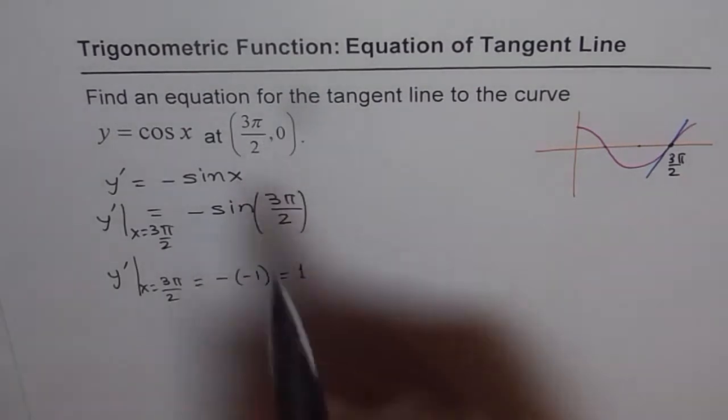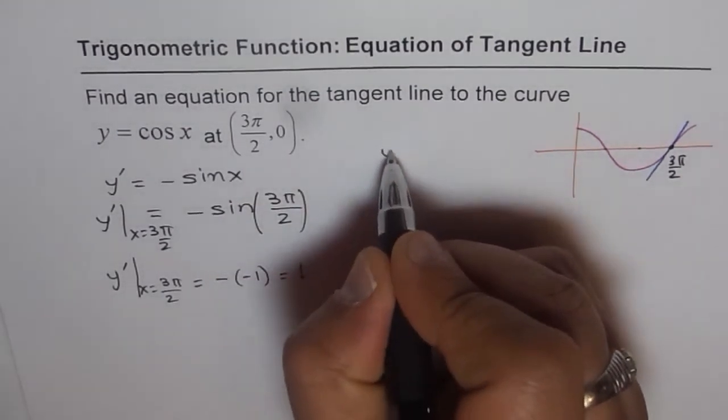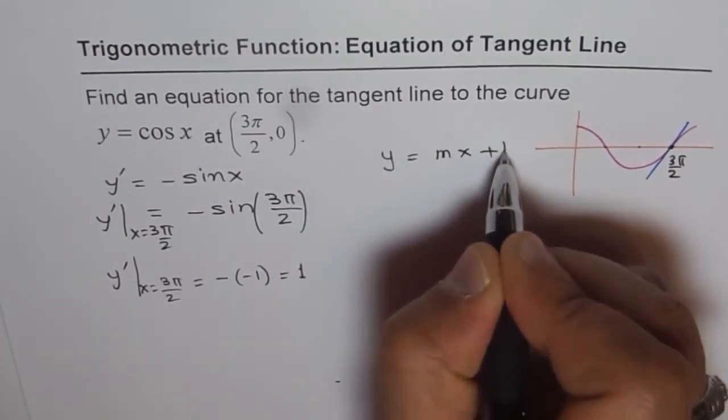Now if slope is given and a point is given, how can you find the equation of line? y equals mx plus b.